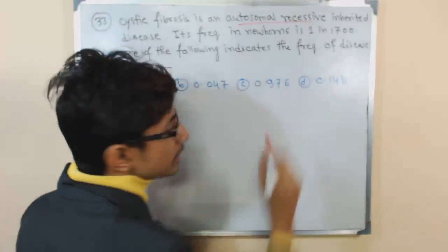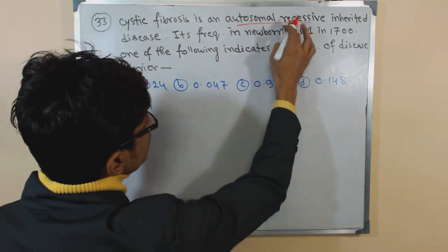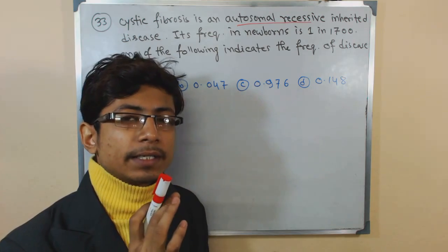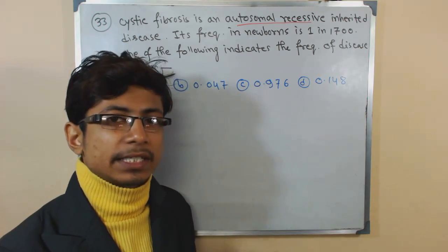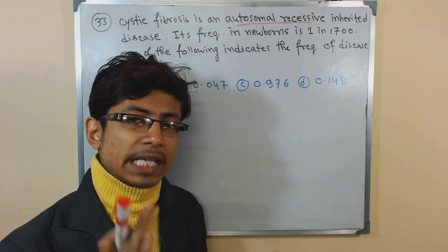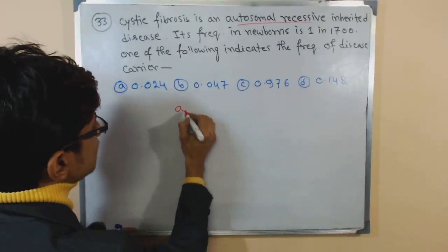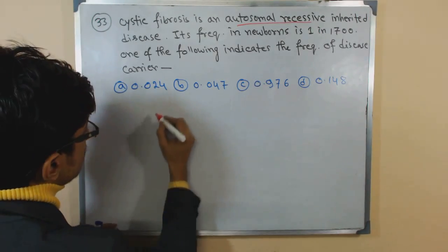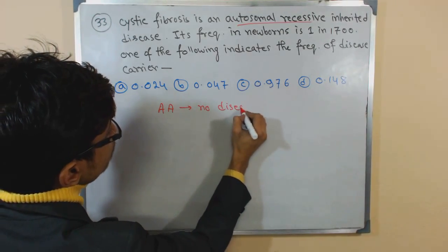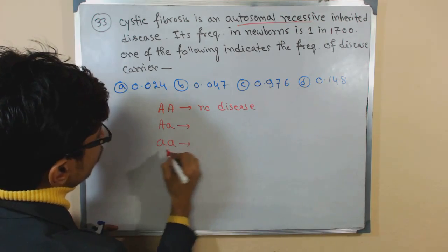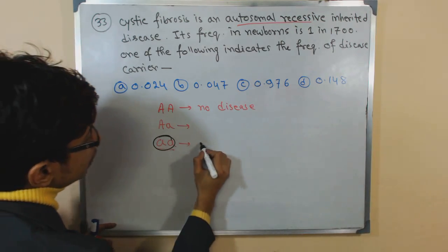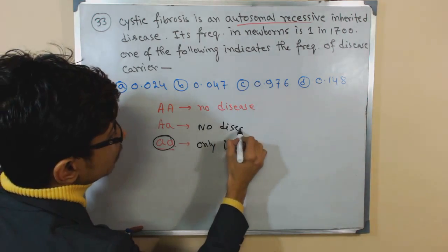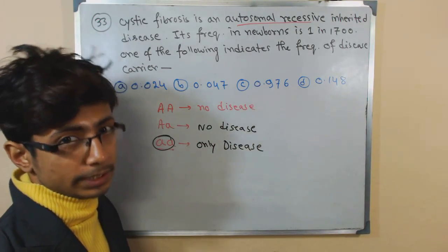Cystic fibrosis is a very common autosomal recessive disease. That means the disease will only manifest if both alleles are recessive. A person is only considered to have cystic fibrosis if their genetic makeup has both alleles as small 'a' (recessive). So: capital A capital A — no disease; capital A small a — no disease; small a small a — this is the only condition that causes the disease.